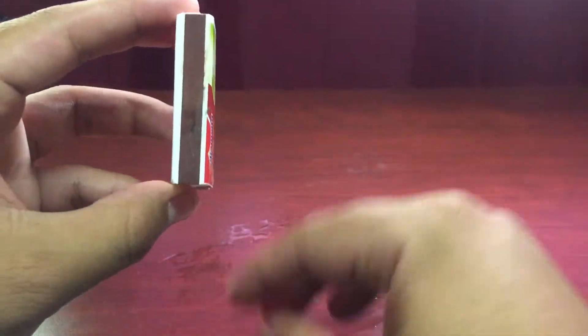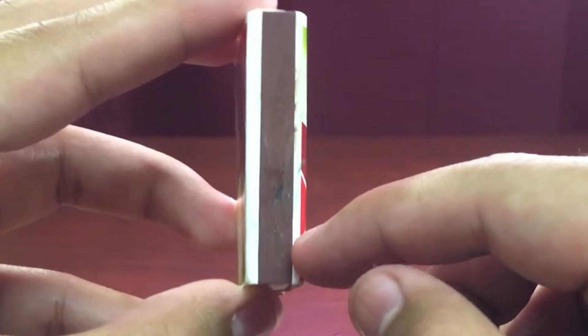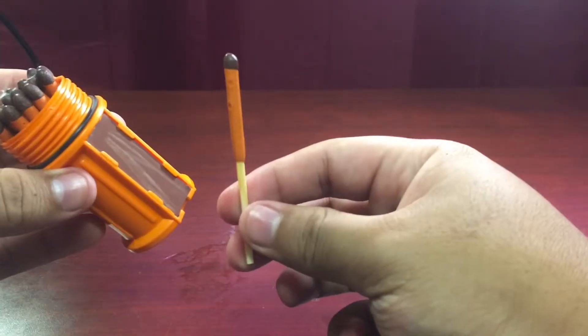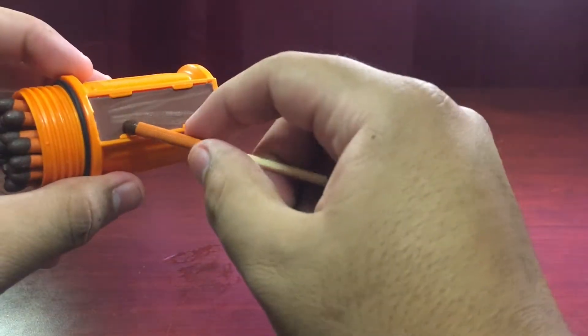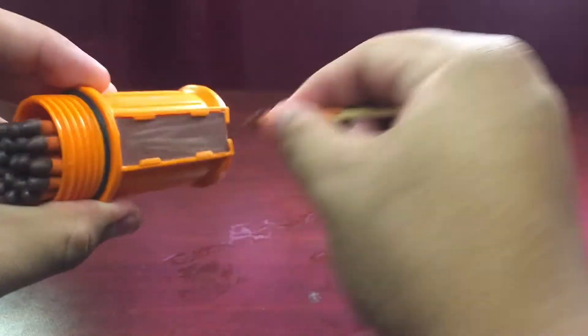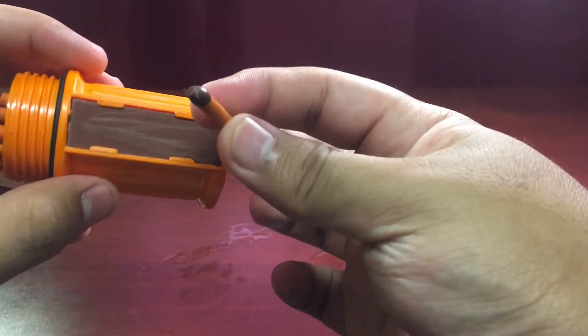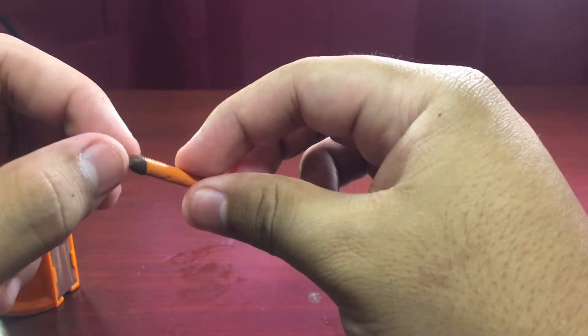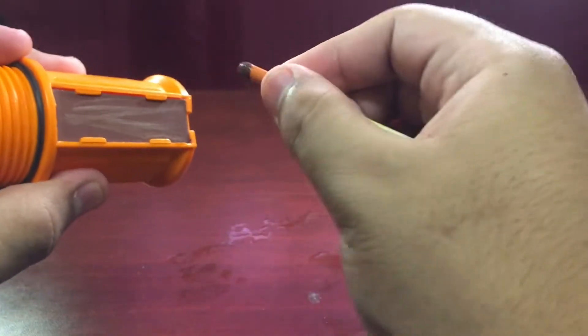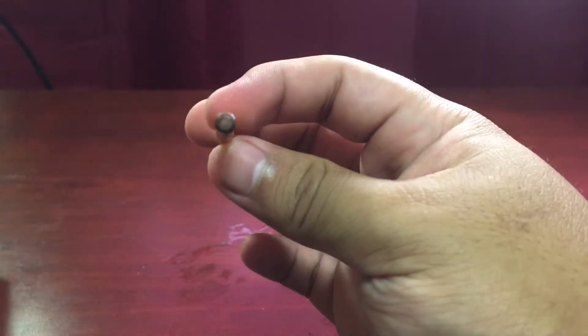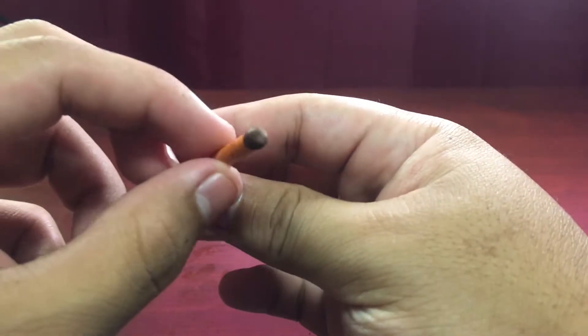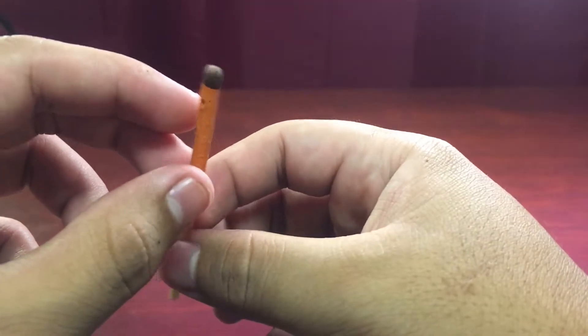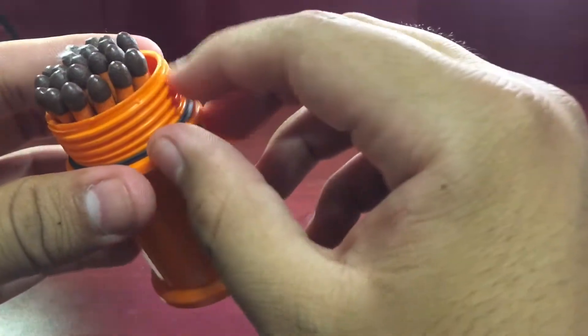And here we got this waterproof match, let's see if it works. Okay, well, why isn't it working? I don't know if you can see that, but the same thing that's happening with the regular match is happening with this match. I'm guessing that's why it has like this little sealing thing, but then why does it say waterproof?